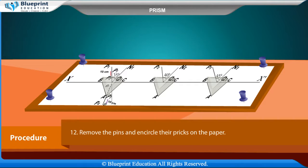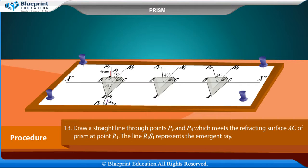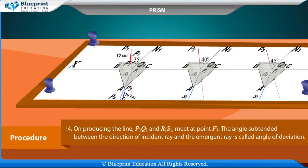Remove the pins and encircle their pricks on the paper. Draw a straight line through points p3 and p4 which meets the refractive surface AC of prism at point R1. The line R1 S1 represents the emergent ray. On producing the line p1 q1 and R1 S1 meet at point F1.